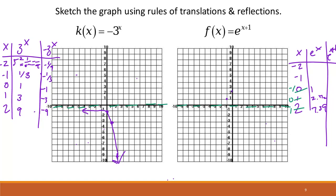And then 1, 7.39. So it's looking like this, and it's getting close to that asymptote without actually touching it.